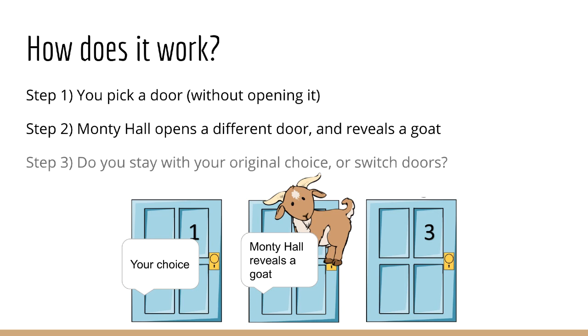The next question you have to answer is, do you stay with door number one, or do you switch to door number three? Your job is to pick a door that does not contain a goat, and so the real question is, does Monty Hall opening some other door to reveal the goat help you in any way?